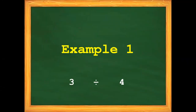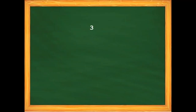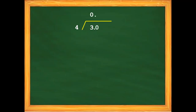For example, we have 3 divided by 4. To know if 3 divided by 4 is a terminating decimal, we have to divide it and find its quotient. 3 divided by 4 cannot be divided directly, so we put 0, place the decimal point, and add 0.